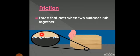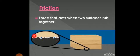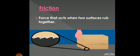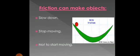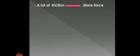Friction can make objects slow down. If you kick a ball along grass, will the ball move forever? No, it will stop because of friction — the ball makes friction with the grass, so it slows down and stops. So friction can make objects slow down, stop, or not even start moving. Also, a lot of friction needs more force.